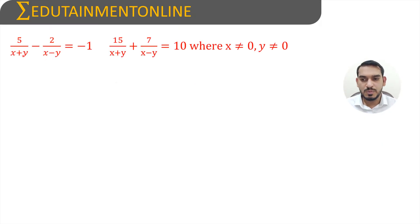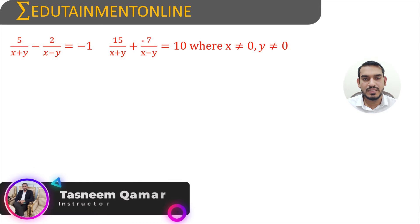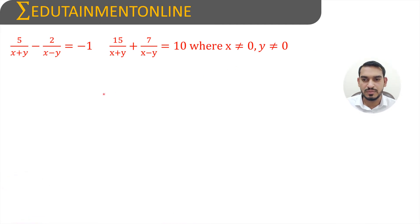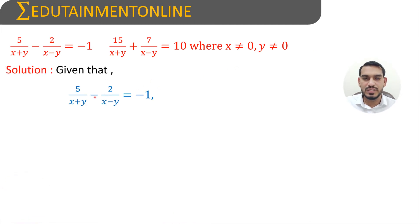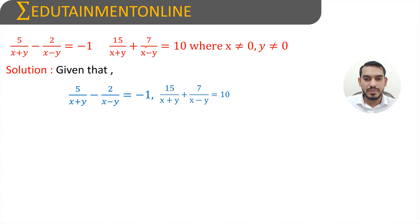Solve 5 by (x+y) minus 2 by (x−y) equals minus 1, and 15 by (x+y) plus 7 by (x−y) equals 10, where x is not equal to 0 and y is also not equal to 0. So we have two equations: the first is 5 by (x+y) minus 2 by (x−y) equals minus 1, and the second is 15 by (x+y) plus 7 by (x−y) equals 10.